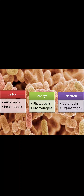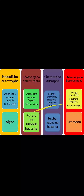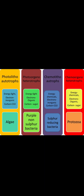The second classification is photo-organo-heterotrophs. These organisms use light as their source of energy, organic substances as their source of electrons, and sugar as their source of carbon. They can also be called photo-heterotrophs.